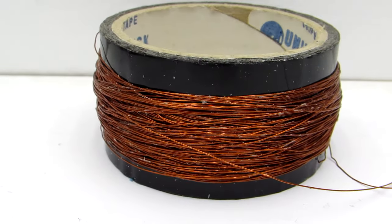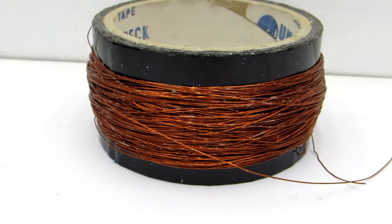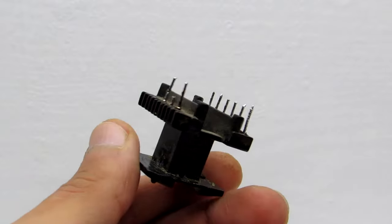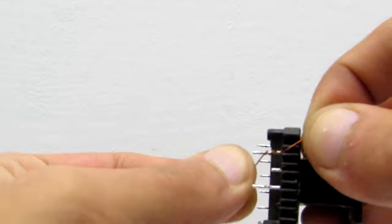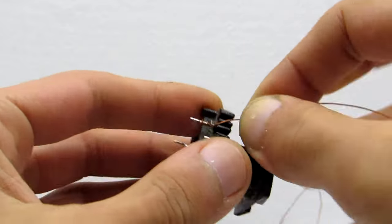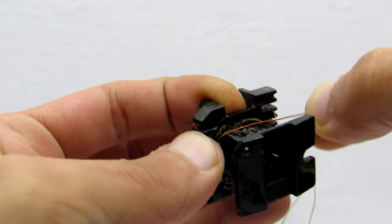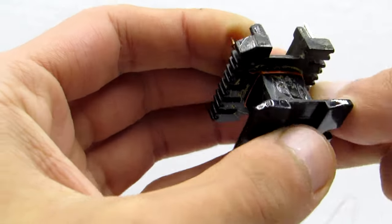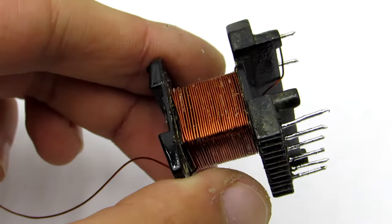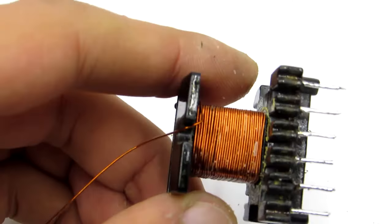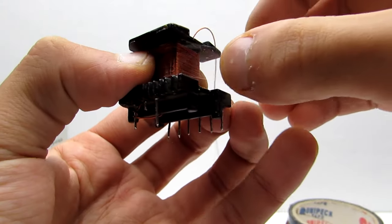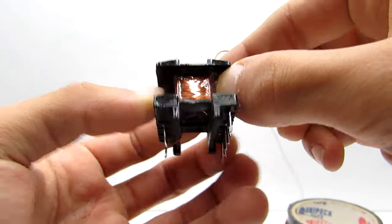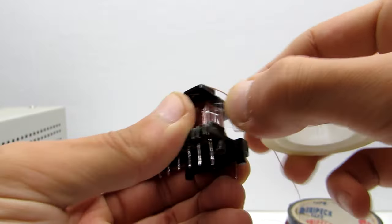For the secondary winding can be used wire from 0.5 to 0.8mm. First on the bare frame is wound the first half of the secondary winding to fill one layer. It is about 28 to 30 turns. Insulate this layer with transparent adhesive tape or Teflon tape. I prefer adhesive tape.